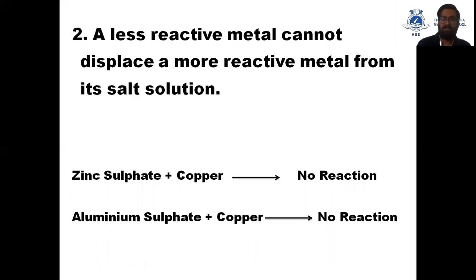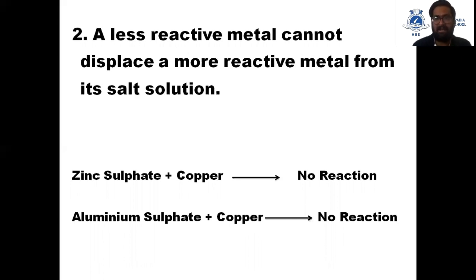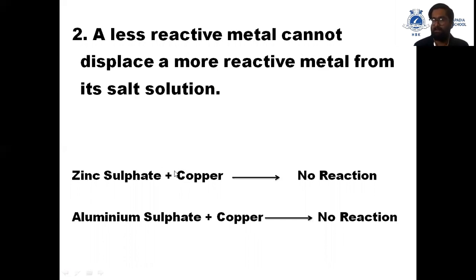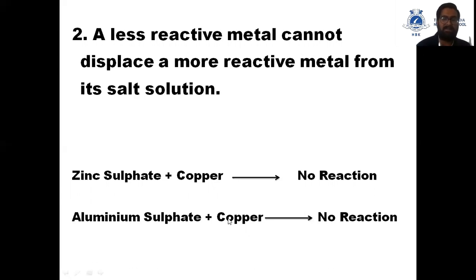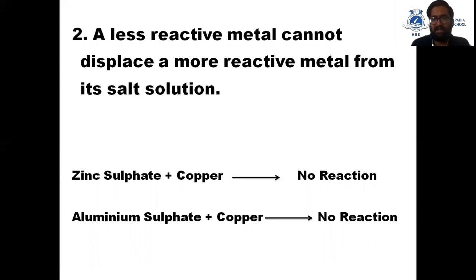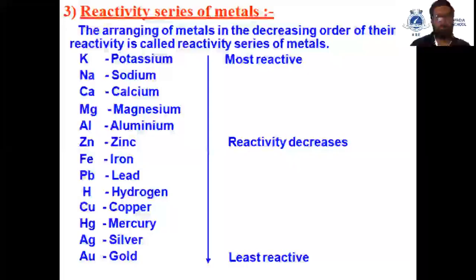If we take the reverse reaction, when iron sulfate solution reacts with copper, no reaction takes place because copper is less reactive than iron. Similarly, when copper metal reacts with zinc sulfate, no reaction takes place because copper is less reactive than zinc. And when copper metal reacts with aluminium sulfate, no reaction takes place because copper is less reactive than aluminium.